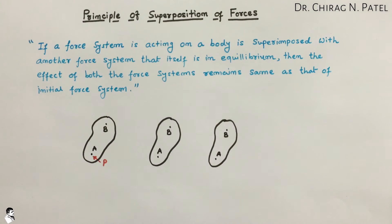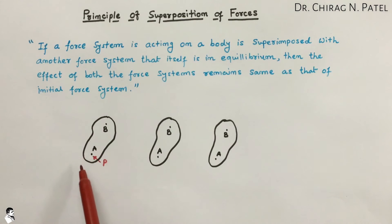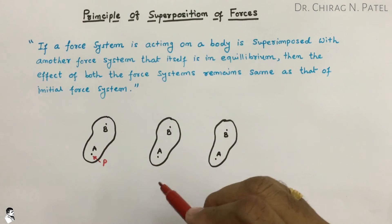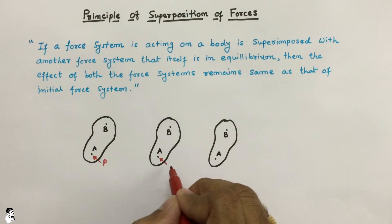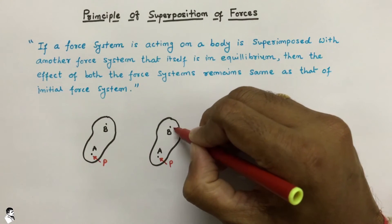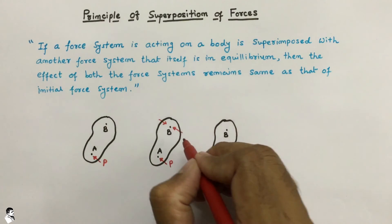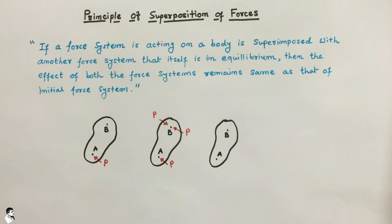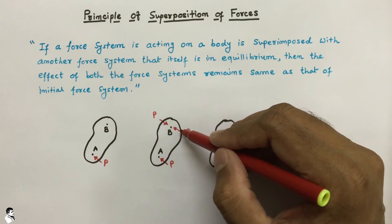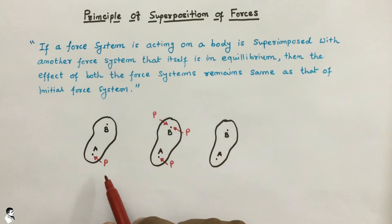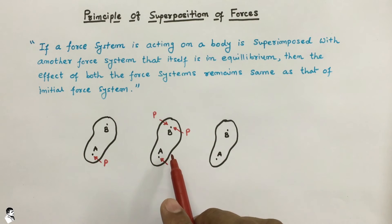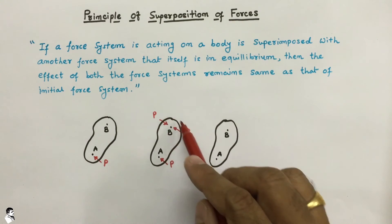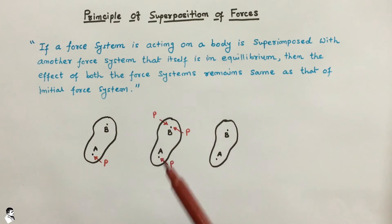We identify the new location as point B, while ensuring that the effect given by force P on the body remains the same. After the application of force P at location A, we apply a similar magnitude force P in both directions — equal and opposite — at point B. After applying this equal and opposite force P at point B, there is still no difference in the system.